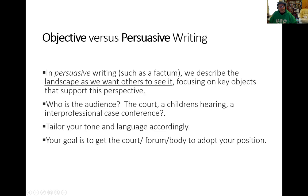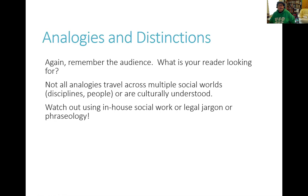In persuasive writing, particularly looking at facts, we describe the landscape as we want others to see it — focusing on key objects that support this perspective. Who's the audience? Is it the court, a children's hearing, an interprofessional case conference? You need to tailor your tone and language accordingly. Your goal is to get the court, the forum, or the body to adopt your position. We need to look at analogies and distinctions, remembering the audience and what your reader is looking for. Not all analogies travel across different social worlds, different disciplines, or are culturally understood. So if you get that wrong, an analogy can totally backfire. Watch out using in-house social work or legal jargon, certain phrases, and particularly acronyms.